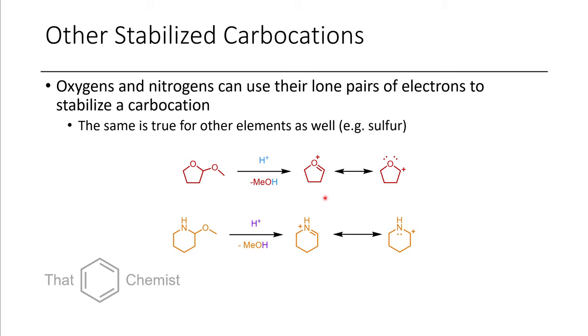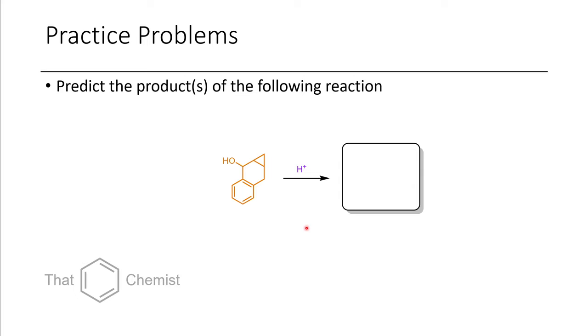And so for practice for next lecture, I'd like to assign two problems. The first one being what product forms when you treat this secondary alcohol with an acid. We have an interesting functional group here. Maybe that'll participate. See if you could figure it out on your own. But otherwise, we'll talk about it next lecture.